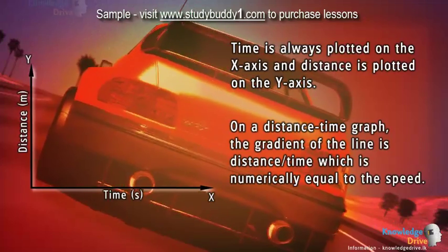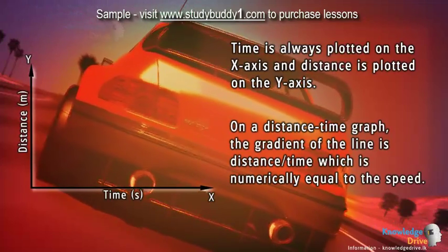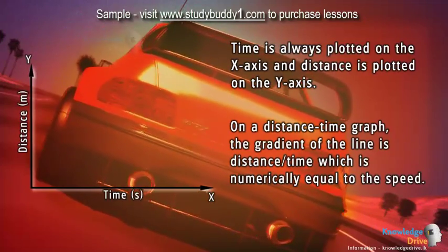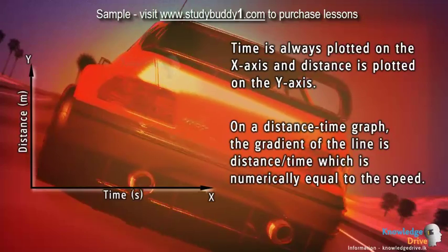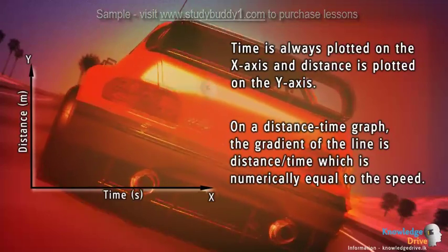On a distance time graph, the gradient of the line is distance over time, which is numerically equal to the speed.